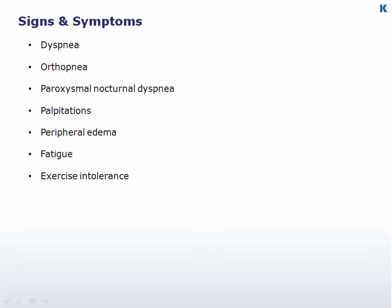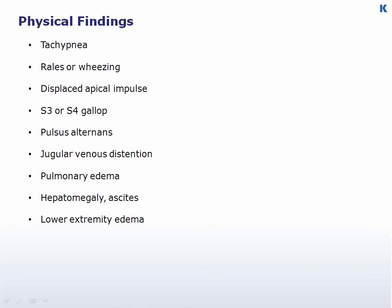These include shortness of breath, or dyspnea, typically worse when lying flat, which is called orthopnea. Nocturnal breathlessness and cough, known as cardiac asthma or paroxysmal nocturnal dyspnea. Palpitations, foot and ankle swelling, fatigue, and exercise intolerance. Typical findings on physical examination include tachypnea, rales or wheezing, and a displaced apical impulse.